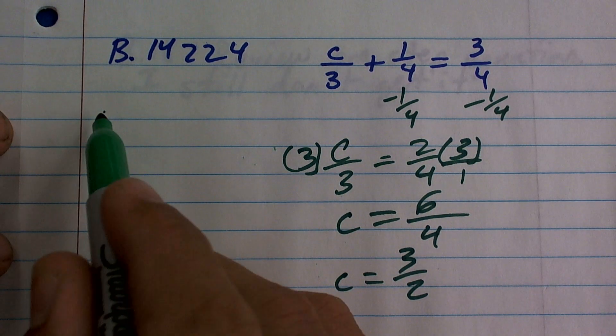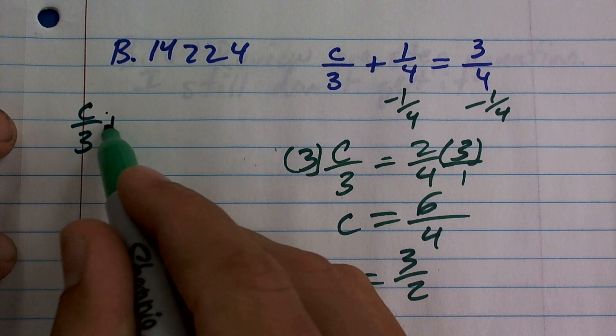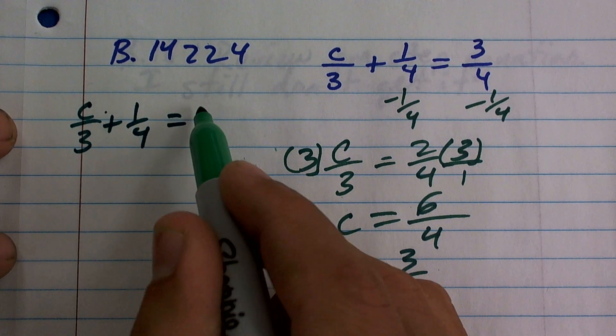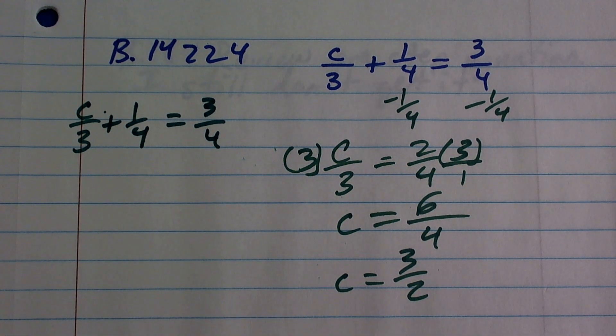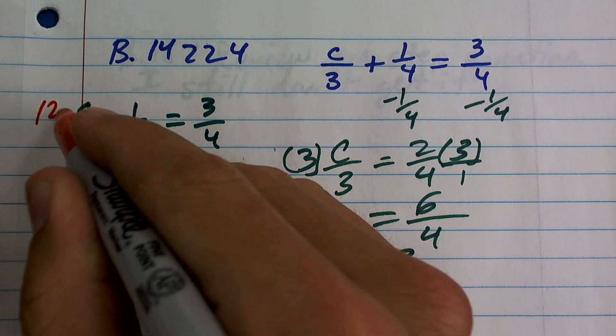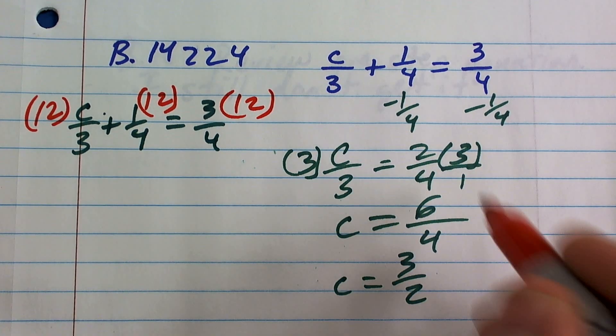So, what you could do is, if I was to redo this problem a different way, because a lot of times they're not always going to be this simple, what I would do is I would multiply every term by 12. So, I'm just showing you this way in case you have fractions that don't work out as easy as these did.